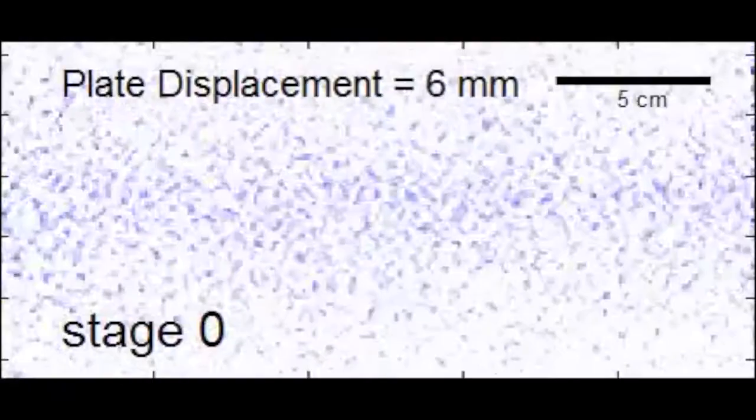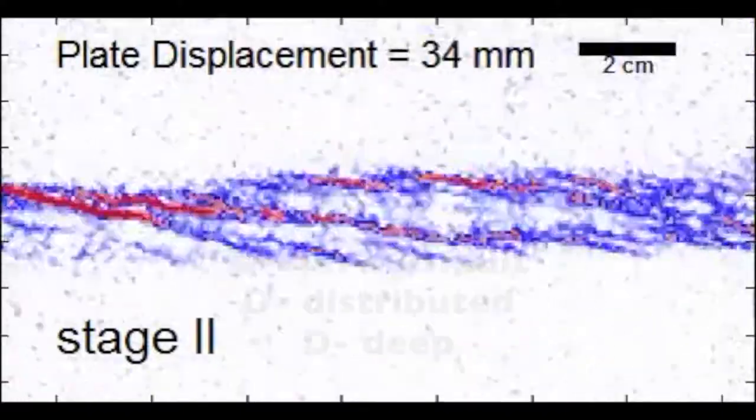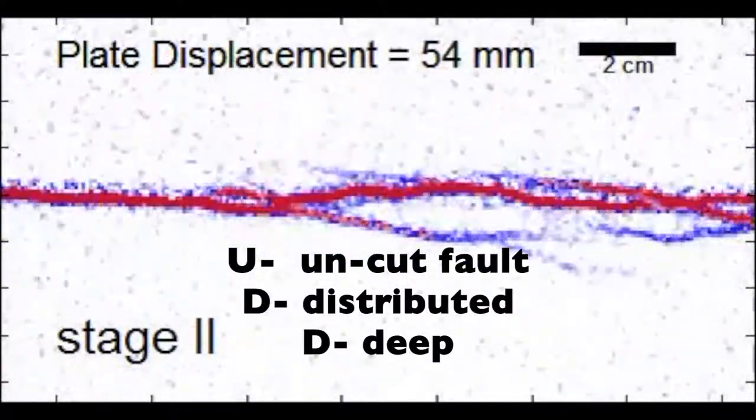And then the third parameter we varied was the thickness of the clay. So we either had a shallow or a deep set of faulting, so the shallow experiments were only two and a half centimeters thick and then the deep ones were about five centimeters thick. So just to give a wide range of boundary conditions.